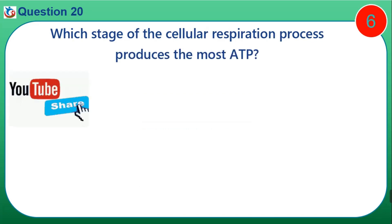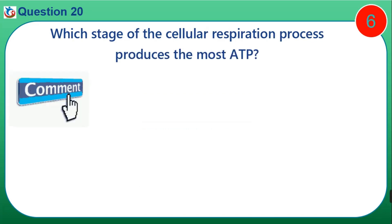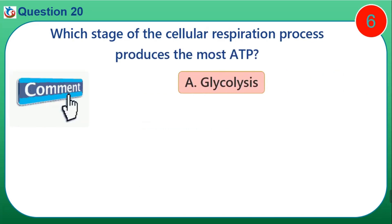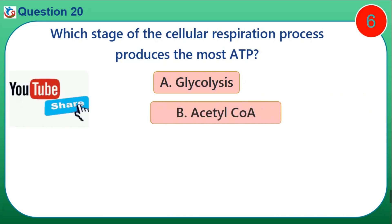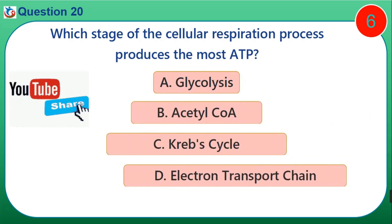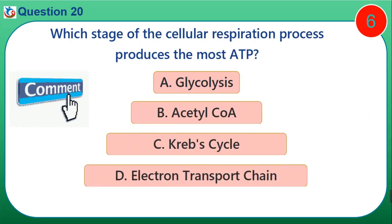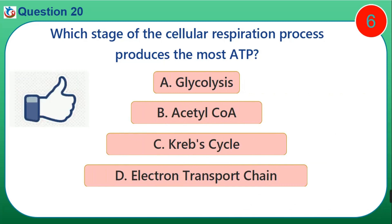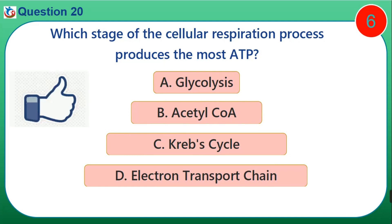Question 20. Which stage of the cellular respiration process produces the most ATP? A. Glycolysis. B. Acetyl-CoA. C. Krebs cycle. D. Electron transport chain.